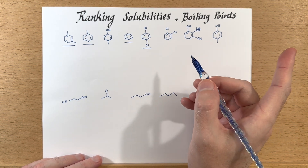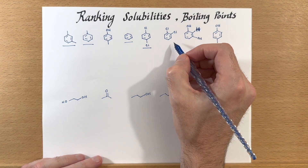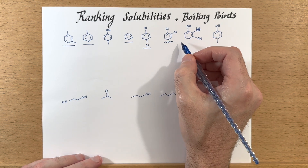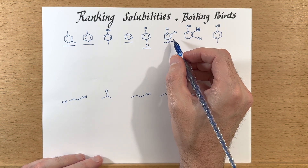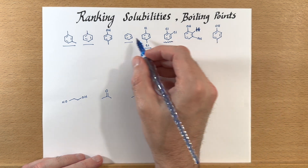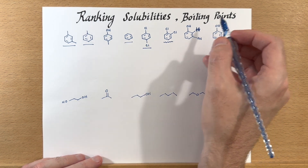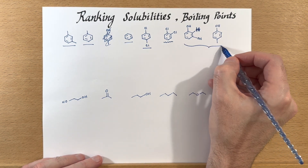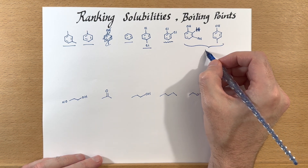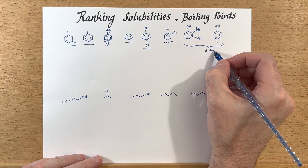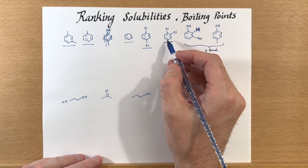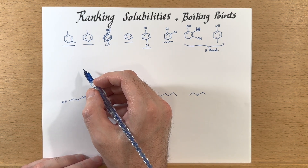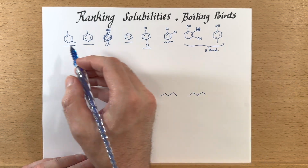The ones that have a dipole are just this one right here, and then these two have hydrogen bonding. So these will be the highest boiling points, this will be the next highest, and then these are going to be the lowest.